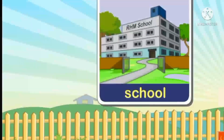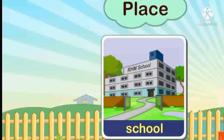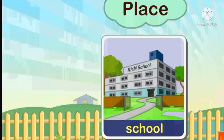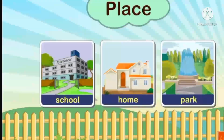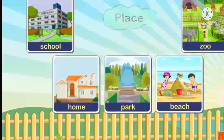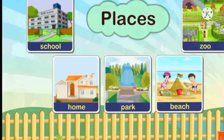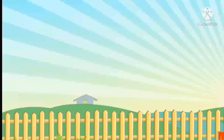Students, tell me — where do you go to study? Yes, school. This is the name of a place. Now, let's see some other place names: home, park, beach, zoo. These are nouns. So students, names of places are nouns.